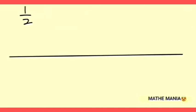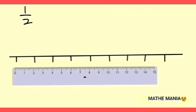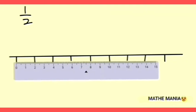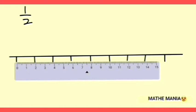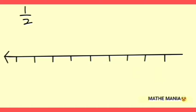First, I am going to represent a simple number, 1/2, on the number line. For that, I will draw a number line and using a scale, I will mark equal intervals on it. Here I have taken two centimeters as the interval — you can take one centimeter, half a centimeter, or any other fixed length as the interval.